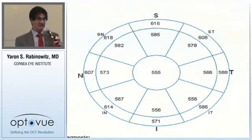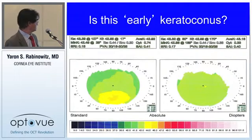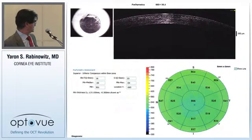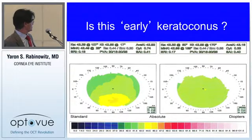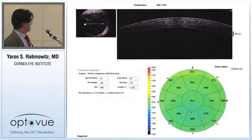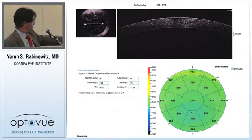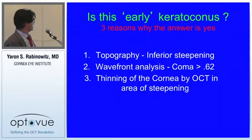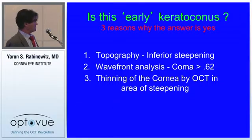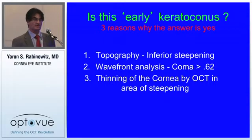In this clinical exercise, the question is whether this patient has early keratoconus. Looking at coma — it's 0.47 on the comparison eye, and 1.11 on this patient versus a normal of 0.62. The OCT shows inferiorly 5.5 microns and centrally 5.14, so that cornea is thin. The answer is yes: three reasons — inferior steepening, wavefront coma greater than 0.62, and OCT-confirmed thinning. Without the OCT, I would not have known that subtle thinning occurred.